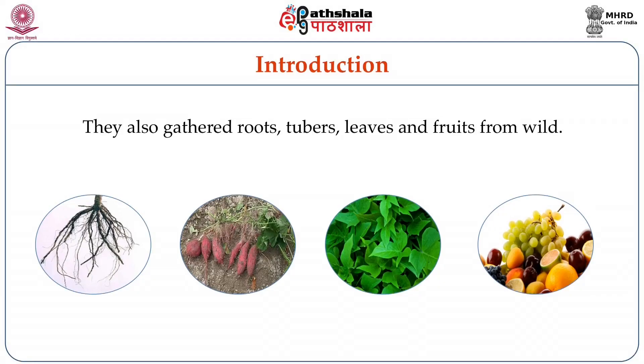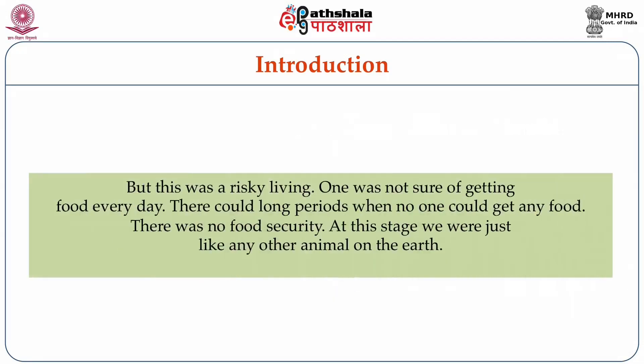Humans depend on agriculture for their basic needs. In the early phases, all humans were hunter-gatherers. They hunted animals and also collected roots, tubers, fruits and leaves from the wild. But this was a very risky living. One was never sure of getting enough food for the day. There could be long periods when people had to go hungry. There was no food security. At this stage, we were just like any other animal on the earth.